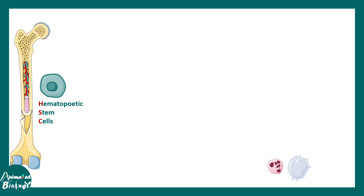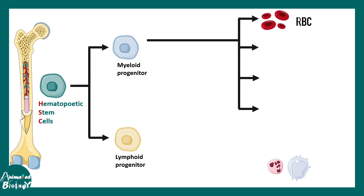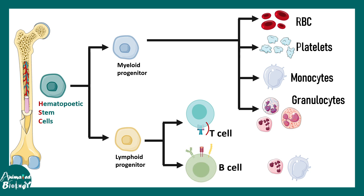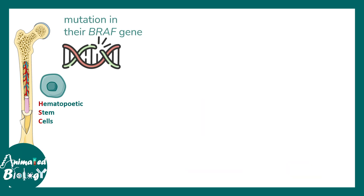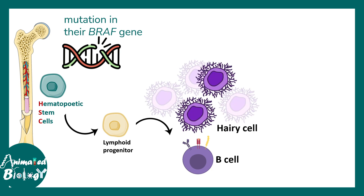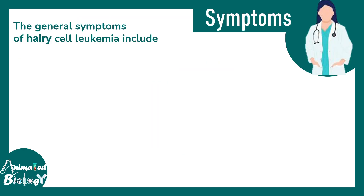Blood cell development starts from a hematopoietic stem cell, which gives rise to myeloid and lymphoid progenitors. The myeloid progenitor gives rise to RBCs, platelets, monocytes, granulocytes, etc., while the lymphoid progenitor gives rise to T cells and B cells. In hairy cell leukemia, the B cells are specifically affected — due to the BRAF gene mutation, these B cells take on a weird appearance with hair-like projections, which is why they are known as hairy cells.